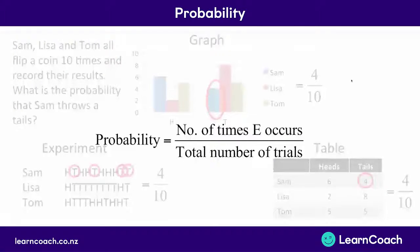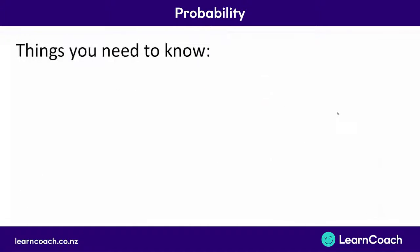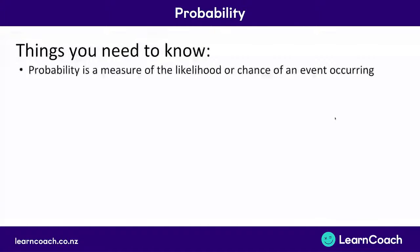And that's how we got our probability of four out of ten. This is how you're going to find all of the probabilities of the things you are going to be asked about. You need to know that a probability is a measure of the likelihood, or the chance, that something will occur — for example, the chance you could throw a tails.